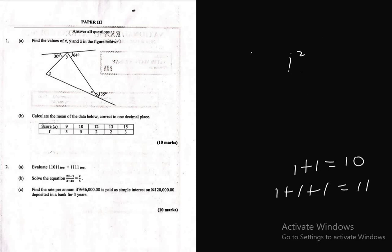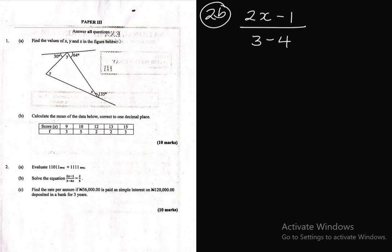Let's take 2B. Question 2B says solve the equation: 2x minus 1 over 3 minus 4x equals 2 over 5.